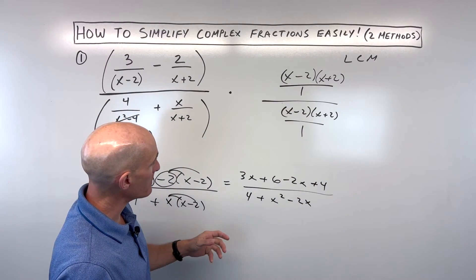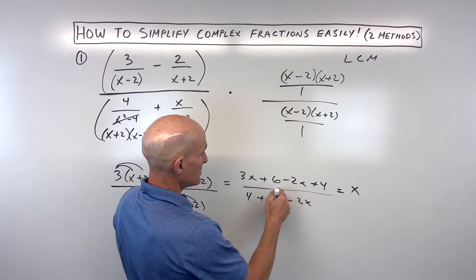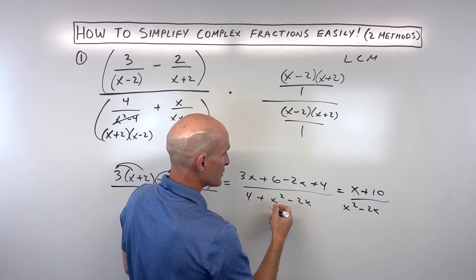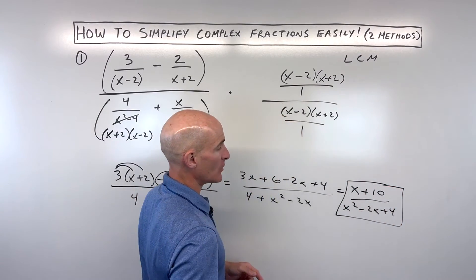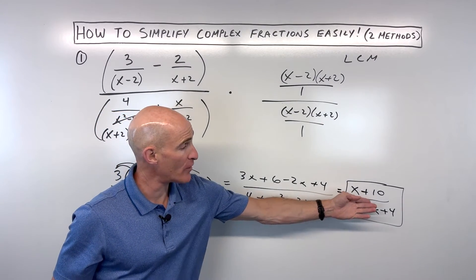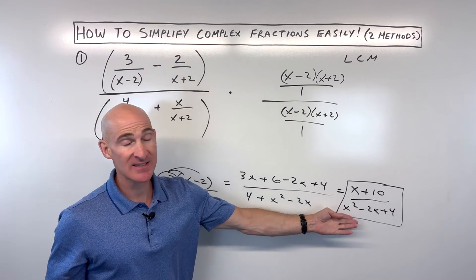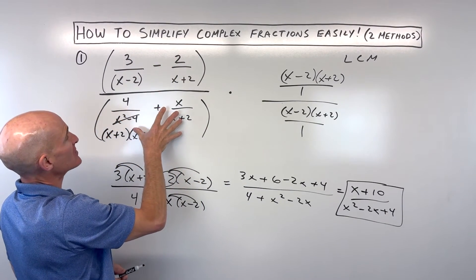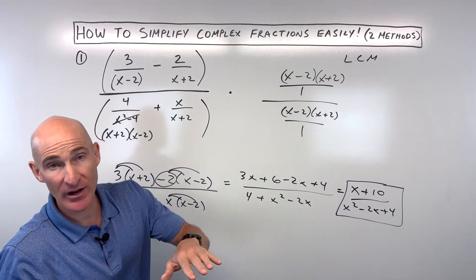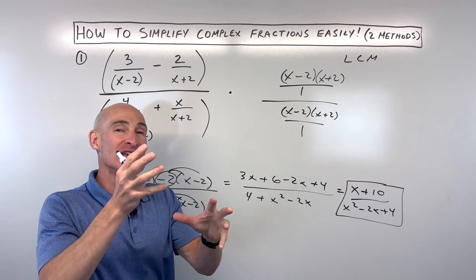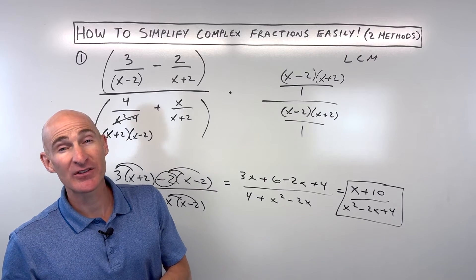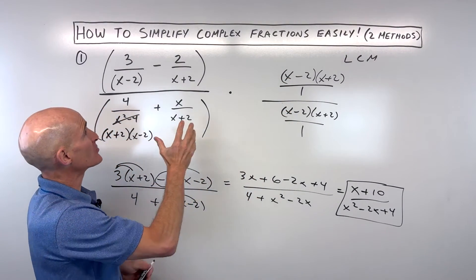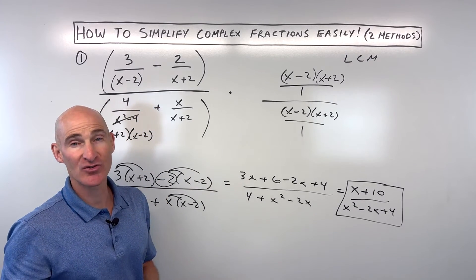Let's simplify. We get three x plus six, then distribute negative two to get negative two x plus four, over four plus x squared minus two x. Combining like terms: three x minus two x is x, and six plus four is ten. In the denominator we have x squared minus two x plus four. We can see this is the exact same answer as method number one. So you can decide which method you like better. Method two is a little bit faster, but you have to identify the least common multiple. The other one you can take your time, combine fractions step by step, and then divide by multiplying by the reciprocal.